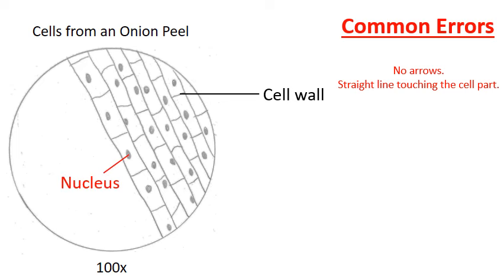Another common error would be labeling the nucleus inside of the field of view. The labels really should be on the outside for a very simple reason. Whatever you include inside of your field of view, you are claiming that you can actually see underneath the microscope. You can't actually see the word nucleus typed underneath the microscope. So a straight line touching the nucleus off to the side of the field of view.